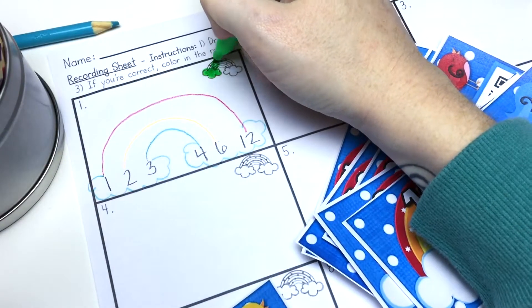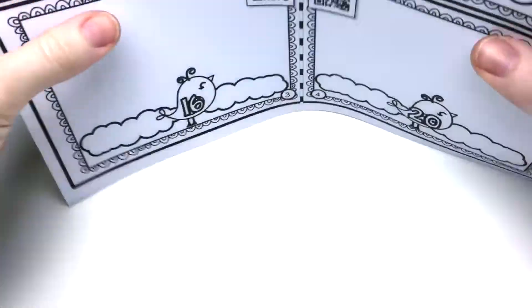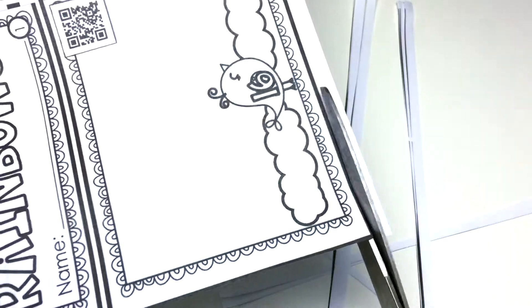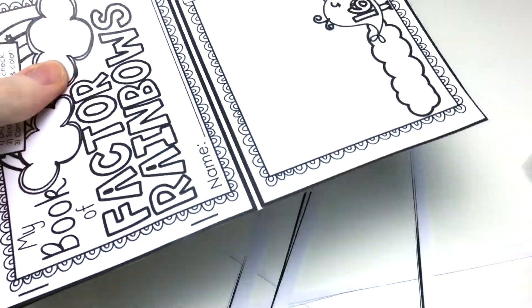If the student is correct, they color in the rainbow; if not, they leave it blank. The last activity is mini books, which follow the same format as the QR code task cards and would be great for a substitute teacher or for homework.